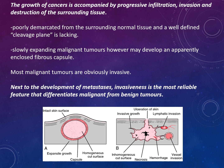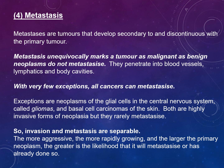Cancer growth is accompanied by progressive infiltration, invasion, and destruction of surrounding tissue. The tumour is poorly demarcated from surrounding normal tissue and a well-defined cleavage plane is lacking. Metastases are tumours that develop secondary to and discontinuous with the primary tumour. With very few exceptions, all cancers can metastasise. Exceptions include gliomas of the CNS and basal cell carcinomas of the skin, which are highly invasive but rarely metastasise.